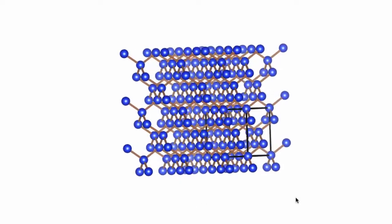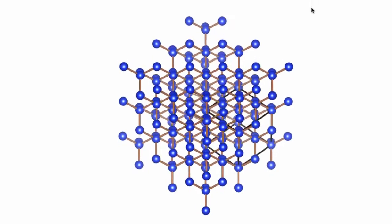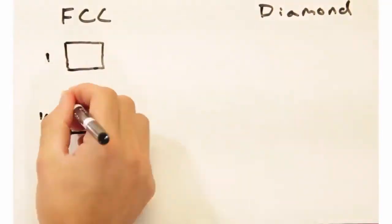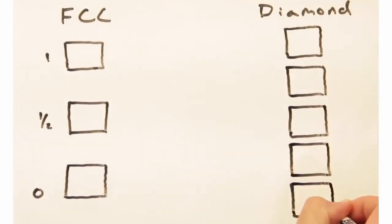So when we look at the diamond structure in Vesta, it's not inherently obvious that there's a connection between the diamond structure and FCC structures. You're right, it's not. Let me try making slices for each, with FCC on the left and diamond on the right.